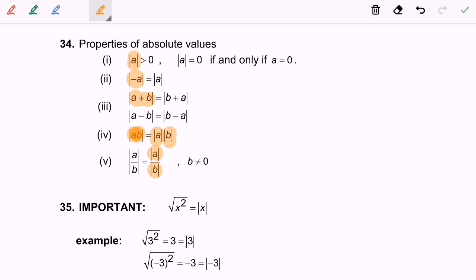Based on statement 35, there is an important note. The square root of x squared actually is equals to modulus of x. For example, we have square root of 3 squared which is equals to 3 or we can say equals to modulus of 3.